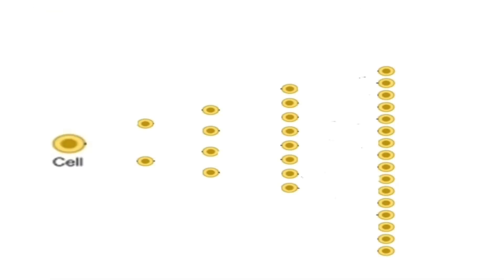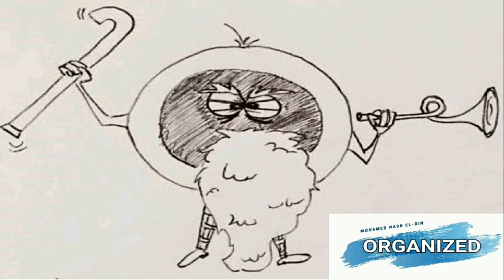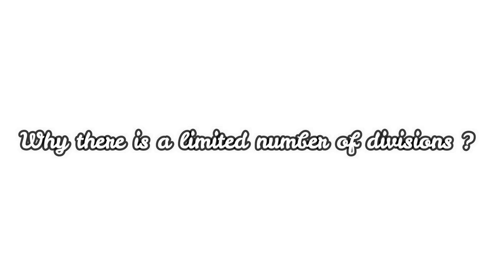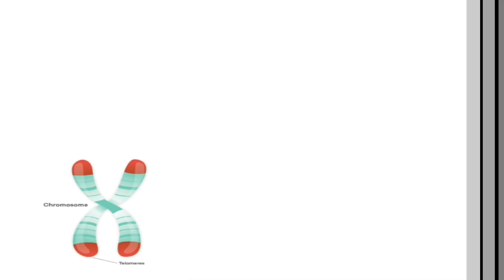The normal cell has a limited number of divisions in its entire life. After reaching this limited number of divisions, the normal cell becomes senescent and will not divide anymore. The question here is: why is there a limited number of divisions? The answer is because of the presence of something called a telomere — a cap at the end of the chromosome, shown here in red in this picture.